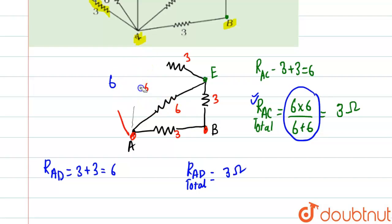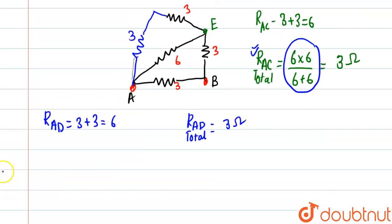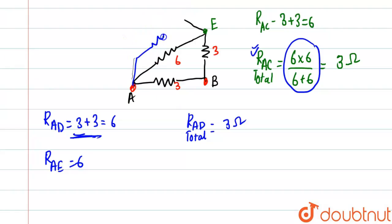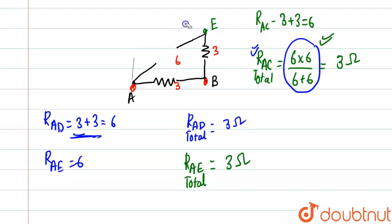We replace it by a 3 ohm resistor again. Once more there is a 3 ohm and 3 ohm connected in series, so R_AE equals 6 ohms — same as the previous steps. Again this 6 ohm and 6 ohm are connected in parallel, so R_AE total equals 3 ohms. We replace it finally with a 3 ohm resistor.